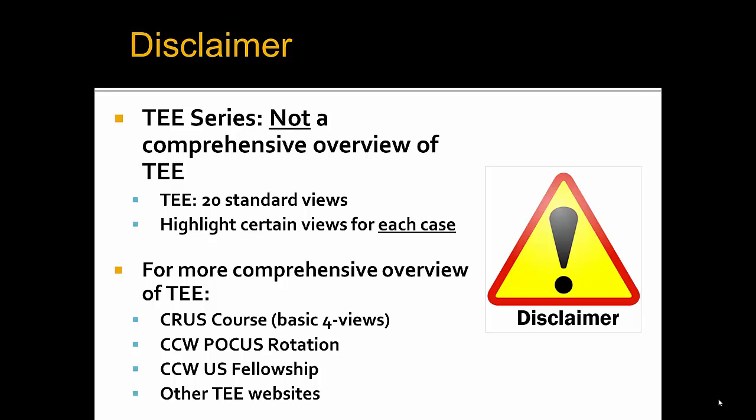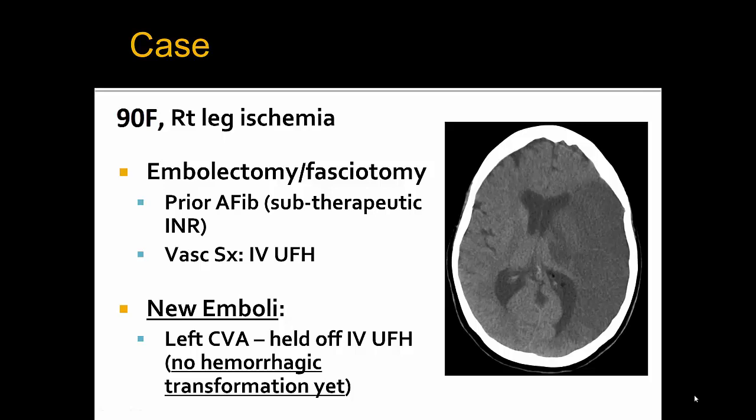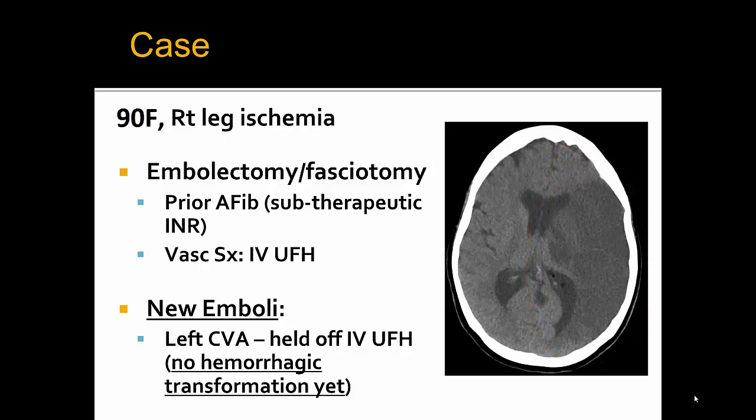For a more comprehensive overview of TEE, please consider the options listed. Getting to the case, we have a female who undergoes an embolectomy and fasciotomy by vascular surgery for right leg ischemia from an embolism thought to be from the patient's prior atrial fibrillation with a subtherapeutic INR off Coumadin. Post-op, she has started on IV heparin to prevent further embolic events. However, she subsequently gets a large left MCA stroke and neurocritical care takes her off the IV heparin for risk of causing hemorrhagic transformation. The ICU team wonders if this is actually safe to do and asks for a POCUS-TEE to rule out further active clot from the heart.